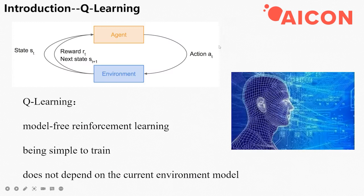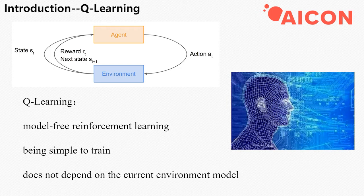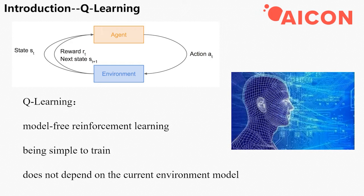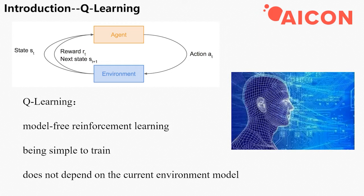First is the introduction part. Q-Learning is a model-free reinforcement learning method that has the advantage of being simple to train and doesn't depend on the current environment model.